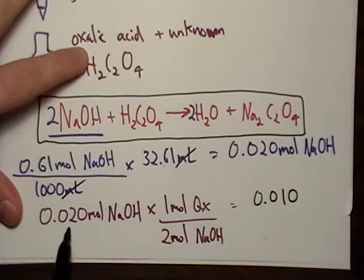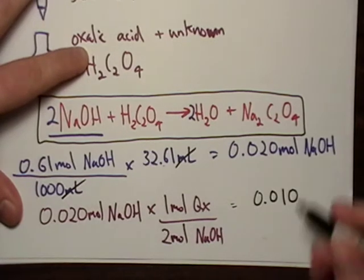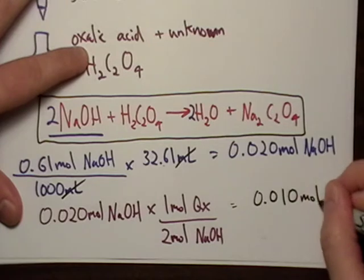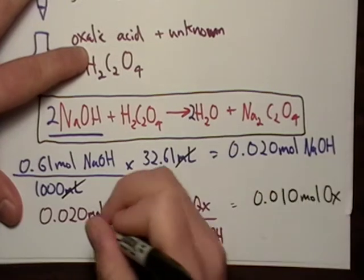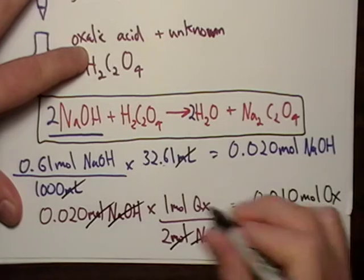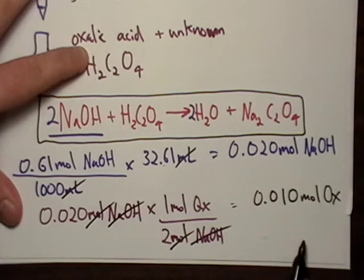If we do the math, we get 0.010. Remember, we have three significant figures here, and these are exact quantities. So this cancels, this cancels, we're left with moles of oxalic acid.